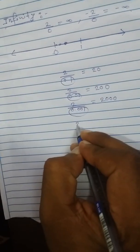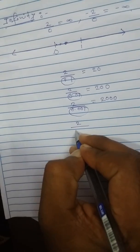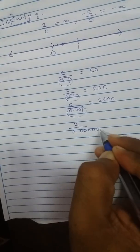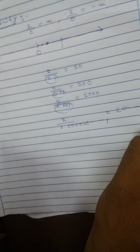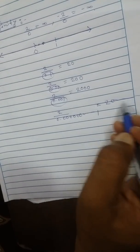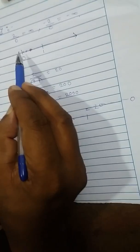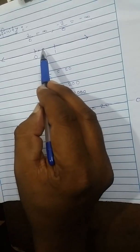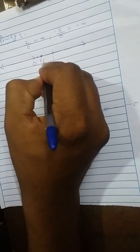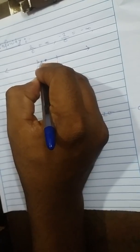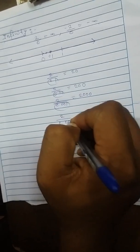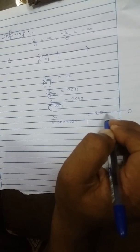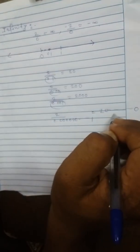Let us divide again — the numerator is fixed. I change the denominator to 0.0...01 with 20 zeros. Now the result is 2 followed by 21 zeros — this number is huge enough. We started from 0.1, then 0.01, then 0.0001, then 0.000...01 with 20 zeros. The result is in increasing order and enormous. Still, we have not divided by zero.